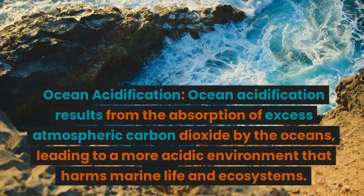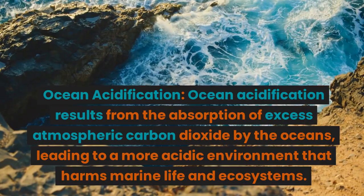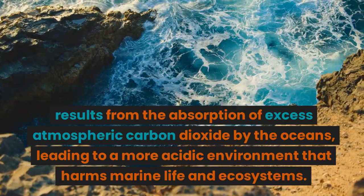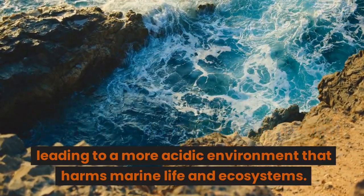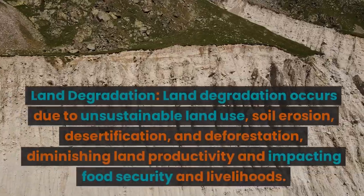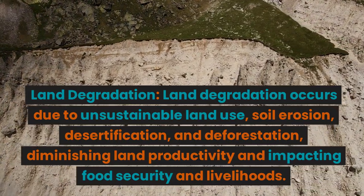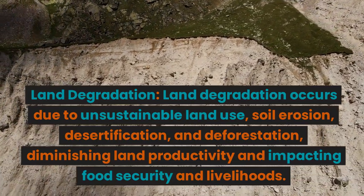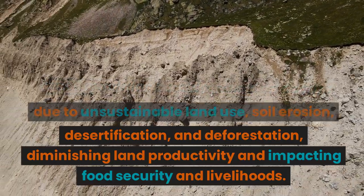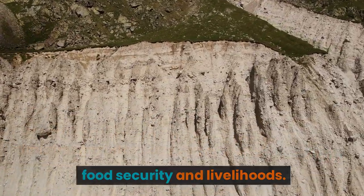Ocean acidification results from the absorption of excess atmospheric carbon dioxide by the oceans, leading to a more acidic environment that harms marine life and ecosystems. Land degradation occurs due to unsustainable land use, soil erosion, desertification, and deforestation, diminishing land productivity and impacting food security and livelihoods.